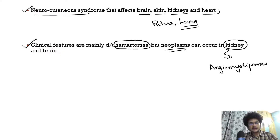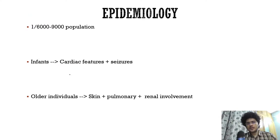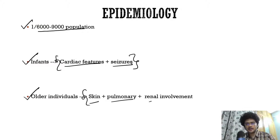In the brain, neoplasms occur as sub-ependymal giant cell astrocytomas. The condition occurs in 1 in every 6,000 to 9,000 population. In infants, clinical features are predominantly cardiac with seizures; in older patients, it's predominantly cutaneous manifestations with lung and renal involvement.